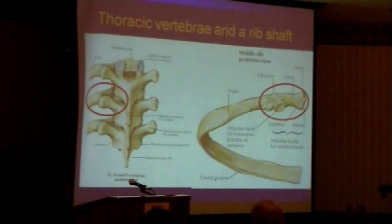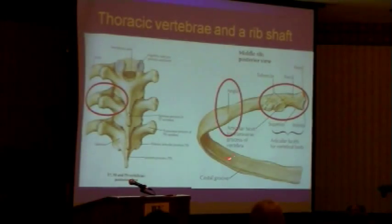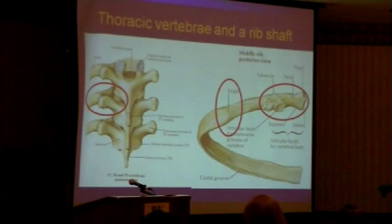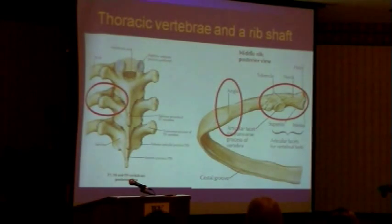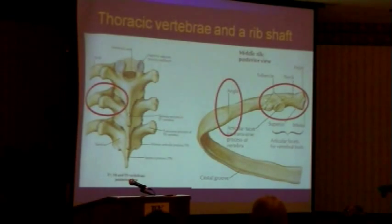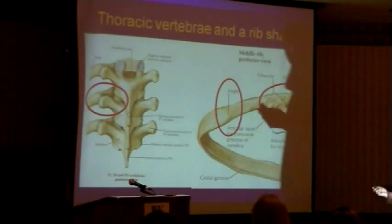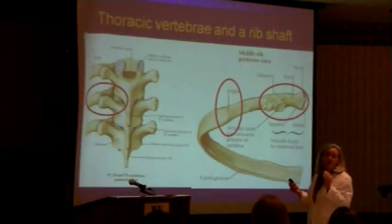What I'm going to focus on is this relatively innocuous landmark called the posterior rib angle. The posterior rib angle is where the rib changes from its horizontal alignment to its downwardly sloping anterior position. It is the most posterior aspect of the rib cage. Clinically, this is very significant for us.